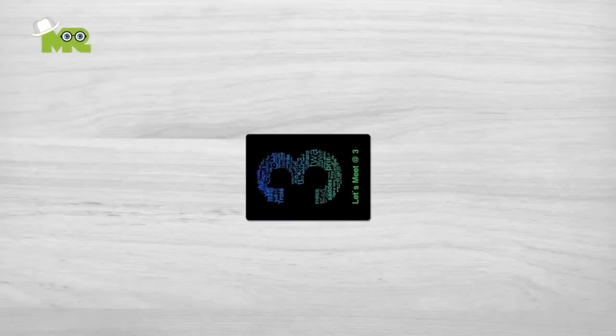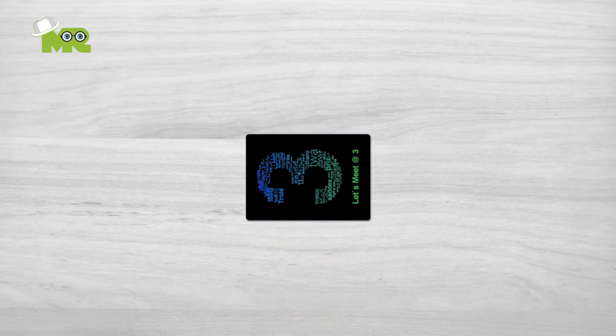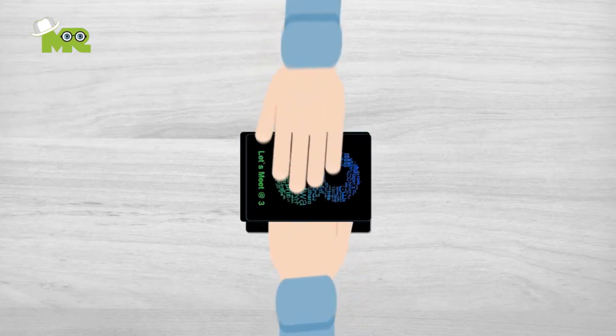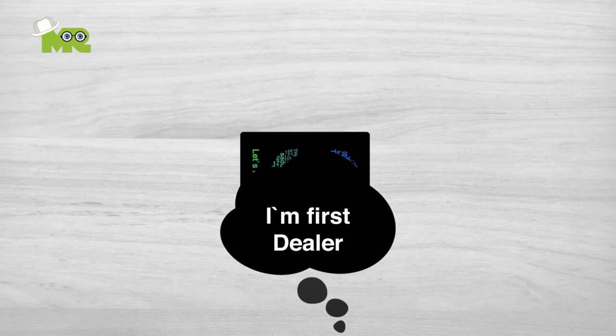Deal in cribbage. To determine the player who is going to deal first, any of the players pick up the deck and shuffle it. The deck is placed face down on the table and each player cuts the deck. The player who has the lowest card on the bottom of the deck is the first dealer.